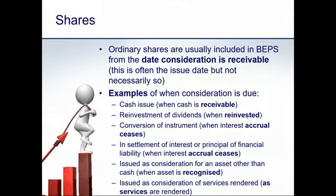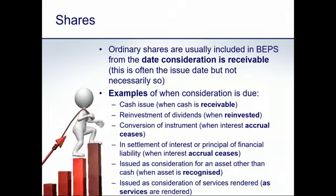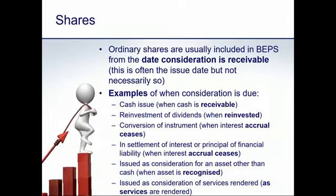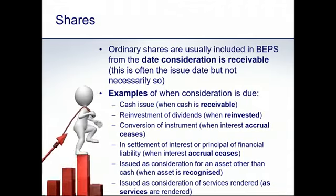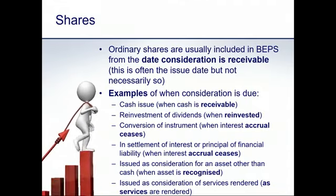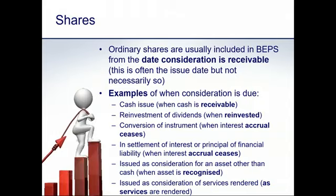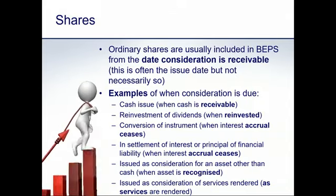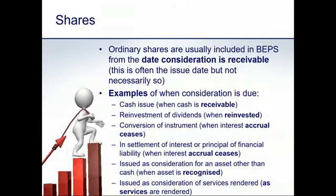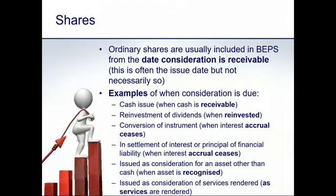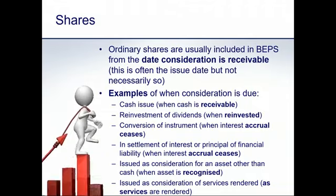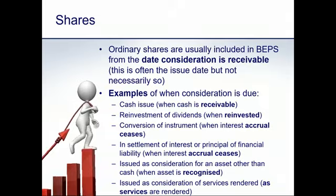If an ordinary share is issued by settling the capital or interest on a financial liability, it is included from the date the interest accrual ceases. If shares are issued as consideration for the purchase or acquisition of an asset, the date they're included in basic EPS is the date on which we meet the asset recognition criteria from the respective standard. For property, plant and equipment, that would be the date on which risks and rewards associated with the item are met.